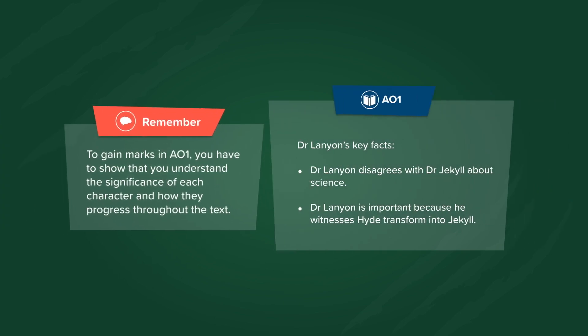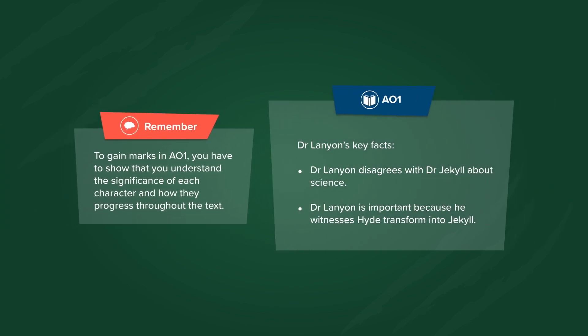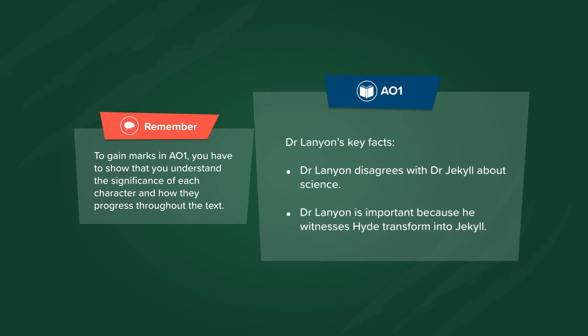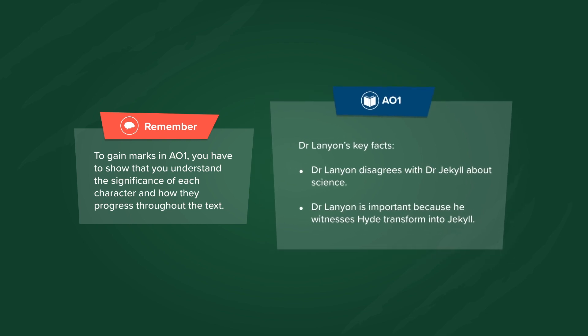Remember, to gain marks in AO1, you have to show that you understand the significance of each character and how they progress throughout the text. Dr Lanyon's key facts: Dr Lanyon disagrees with Dr Jekyll about science, and Dr Lanyon is important because he witnesses Hyde transform into Jekyll.